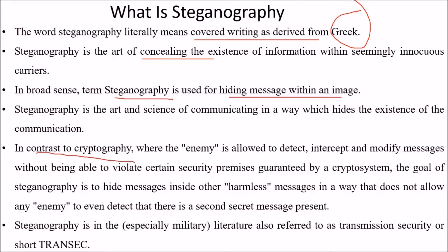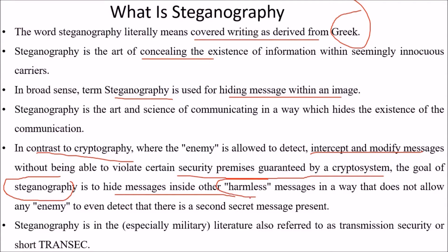In contrast to cryptography, where the enemy is allowed to detect, intercept, and modify messages without being able to violate certain security promises granted by the crypto system, the goal of steganography is different. Steganography hides messages inside other harmless messages in a way that does not allow any enemy to even detect the existence of a second secret message. Steganography is also referred to in literature as transmission security, or in short, TRANSEC.